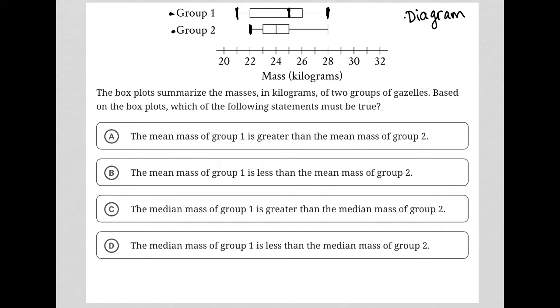Group two has a higher lowest value than group one does. Group two has an equivalent highest value in comparison to group one. And in terms of the median, the median for group two is lower than the median from group one.